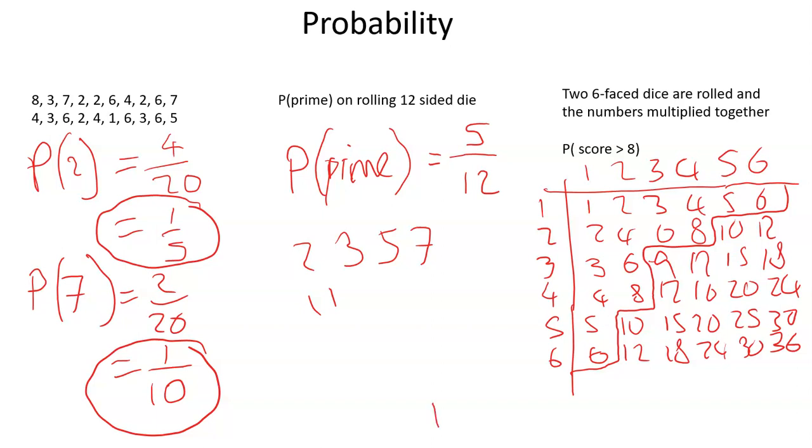So we can just say that the probability of scoring greater than an 8 is 1, 2, 3, 4, 5, 6, 7, 8, 9, 10, 11, 12, 13, 14, 15, 16, 17, 18, 19, 20 out of 36 possible outcomes. And we can cancel that down to 10 over 18, which cancels again to 5 over 9.